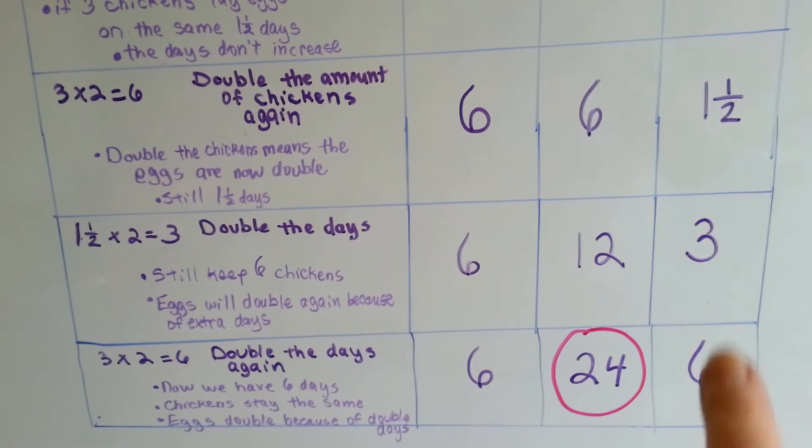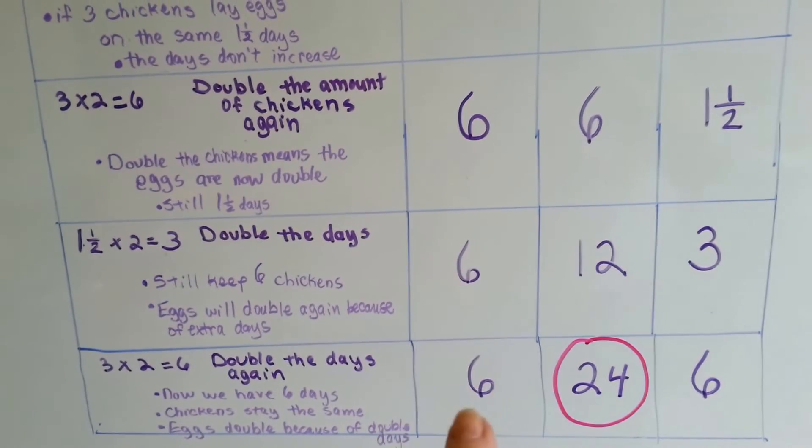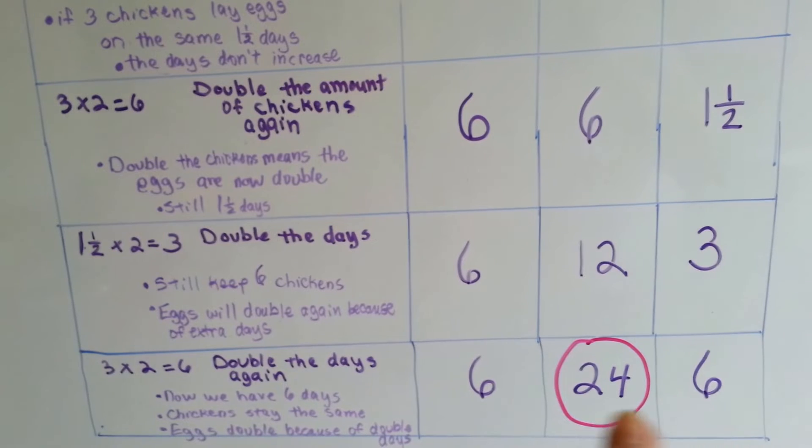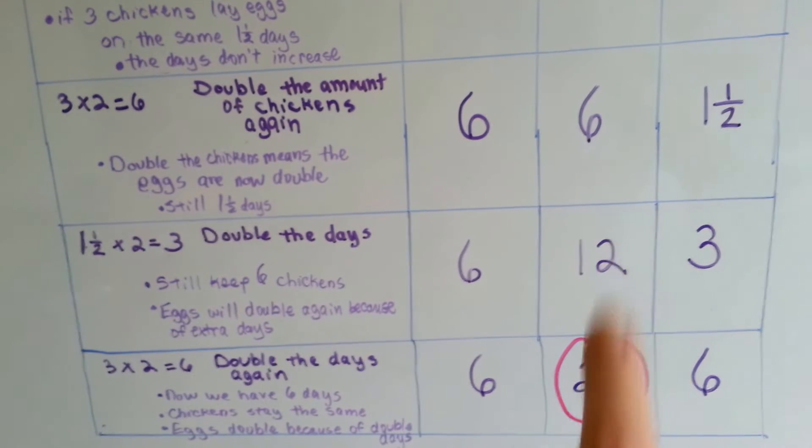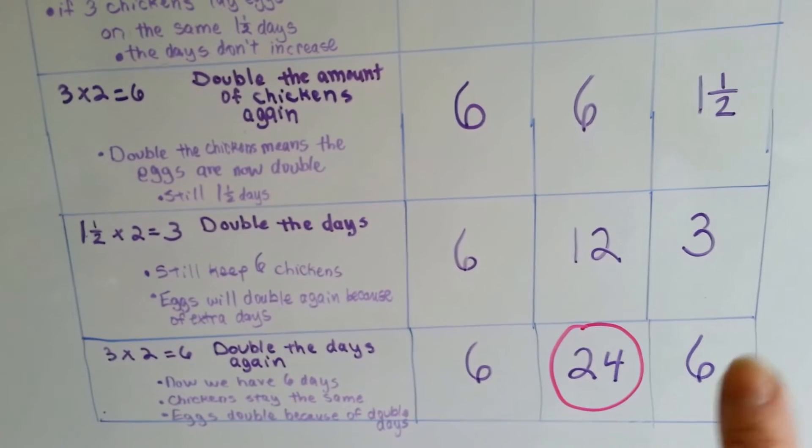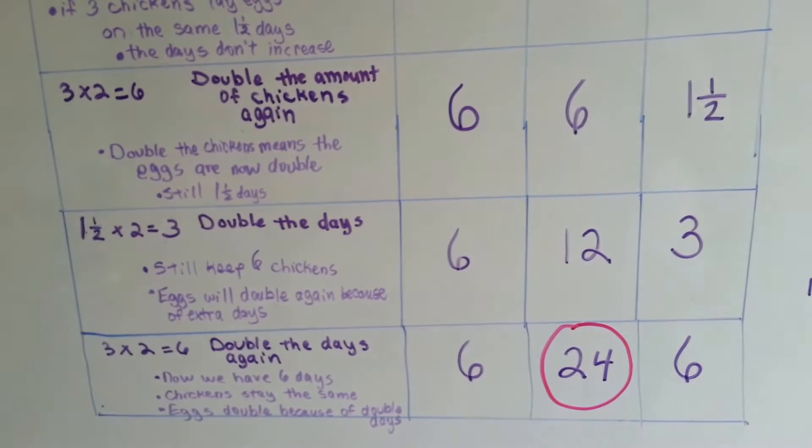To get to the six days, we doubled the days again. We still have the six chickens. Because we doubled the days again, the eggs are going to double again. So now we've got six chickens in six days and they've laid 24 eggs.